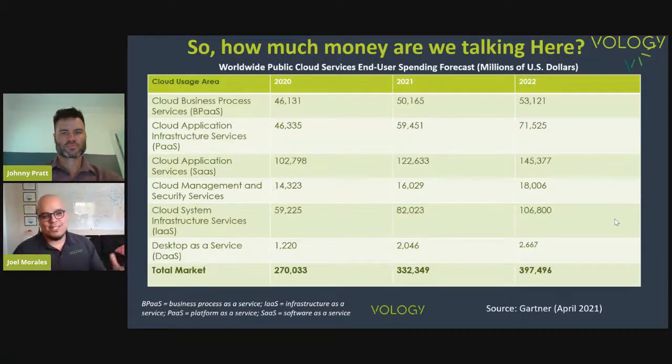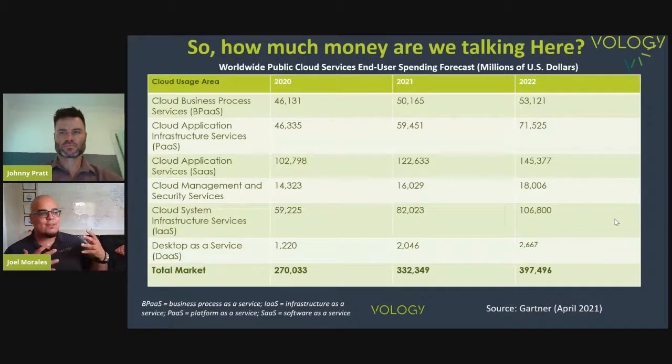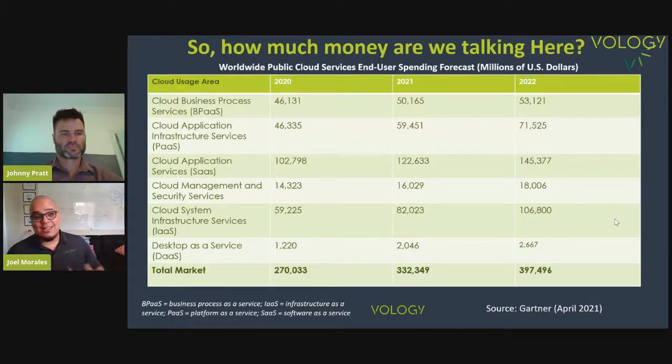This is actually a chart from Gartner from April 2021. Gartner was able to quantify how much money businesses spent in 2021 on the cloud, as well as how much they're forecasting to spend for the remainder of 2021 and into 2022. We can see the different areas of cloud consuming the most dollars: business process services, cloud application infrastructure services, cloud application services or SaaS, PaaS platform services, cloud security services, and cloud infrastructure services or IaaS — which is really today's focus. And then desktop as a service.